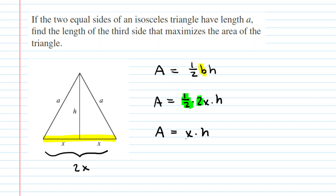This is pretty good, but the problem is that the area is in terms of two variables, and we don't want that. We want our area in terms of just a single variable — typically in terms of X. So we need to do something further here to replace H with an expression in terms of X. That's going to be our next goal.